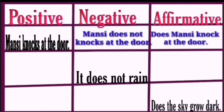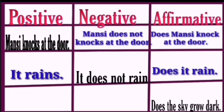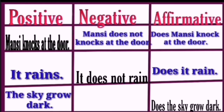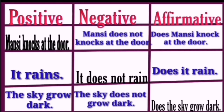'Mansi knocks at the door' — negative: 'Mansi does not knock at the door' (Mansi is third person singular, use 'does not'). Interrogative: 'Does Mansi knock at the door?' Next: 'It does not rain' — remove 'does not' for positive: 'It rains.' Interrogative: 'Does it rain?' Next interrogative: 'Does the sky grow dark?' — positive: 'The sky grows dark' (remove 'does'); negative: 'The sky does not grow dark' (third person singular).